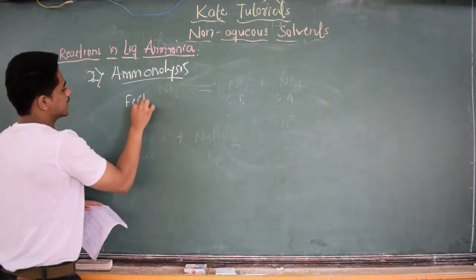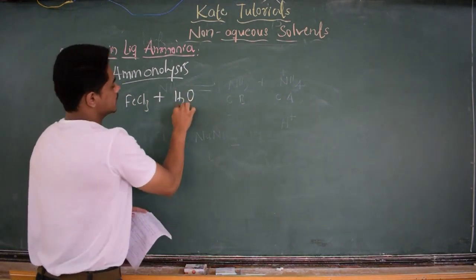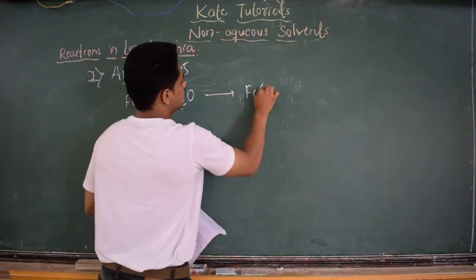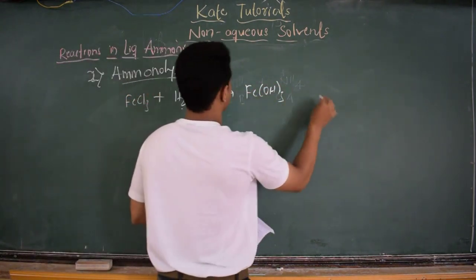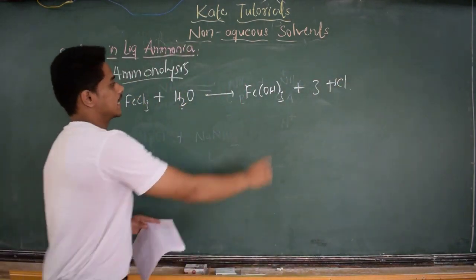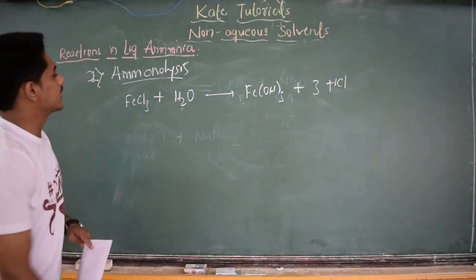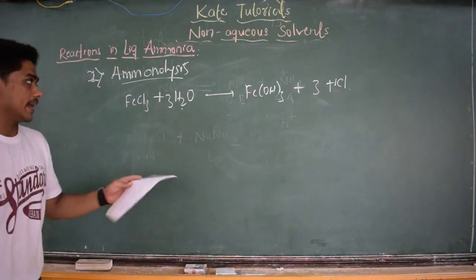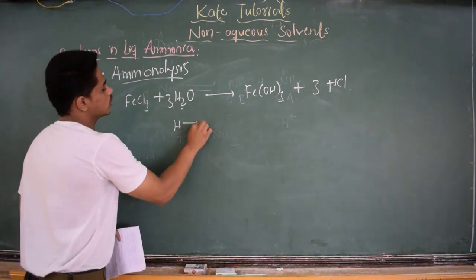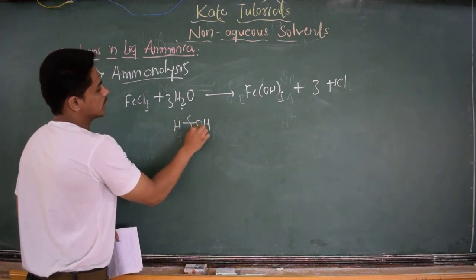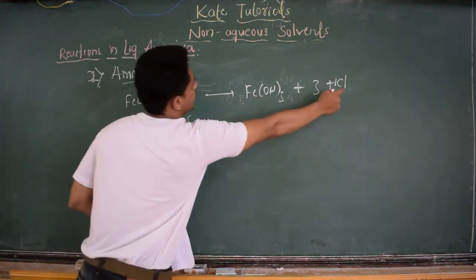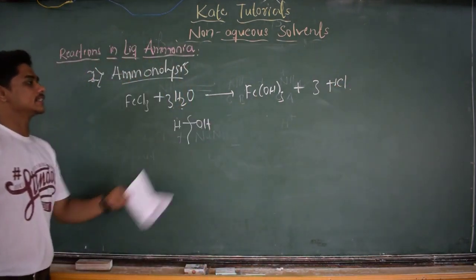As an analogy, consider FeCl₃ in presence of water (aqueous solution). We get Fe(OH)₃ plus 3 moles of HCl. Water breaks as H⁺ and OH⁻; the OH⁻ forms a compound with Fe and the H⁺ forms a compound with Cl. This is hydrolysis because it takes place in presence of H₂O as solvent.